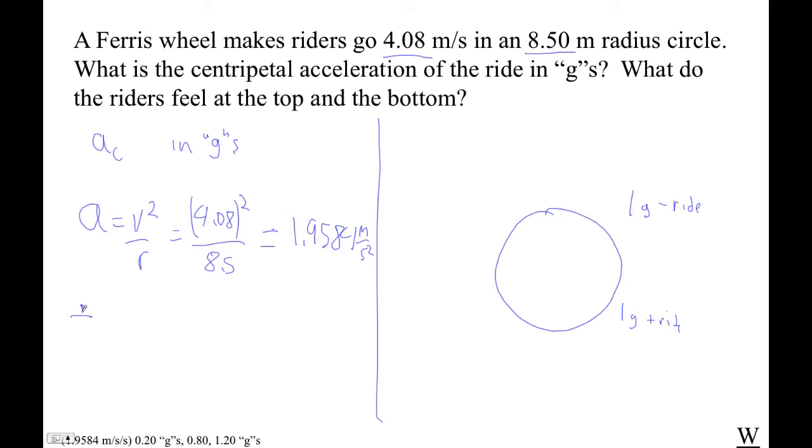And then what you do is you just divide that by 9.8. So meters per second squared divided by 9.8 is going to give you g's. So I go divided by 9.8, and I get 0.1998. So I'm going to say that's about 0.200 g's, just for fun, because that's a nice even number.